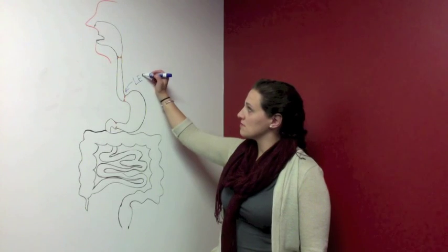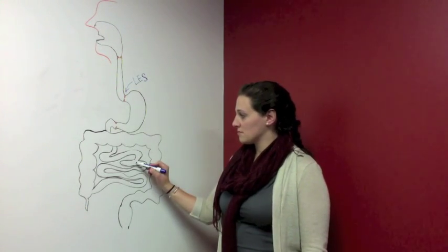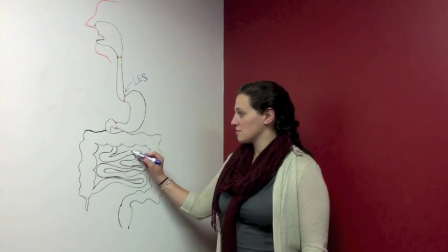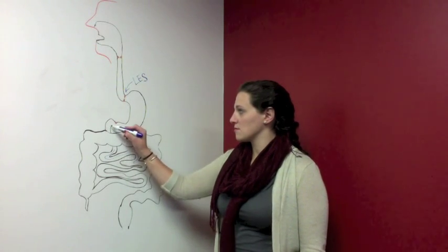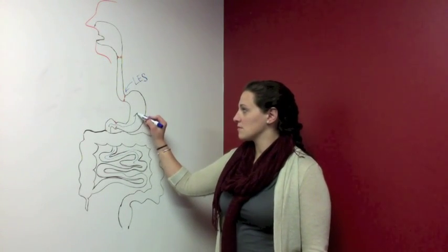Second, a retrograde contraction originates in the mid-small intestine and propagates to the stomach. This contraction accounts for the frequent presence of bile in the vomit.